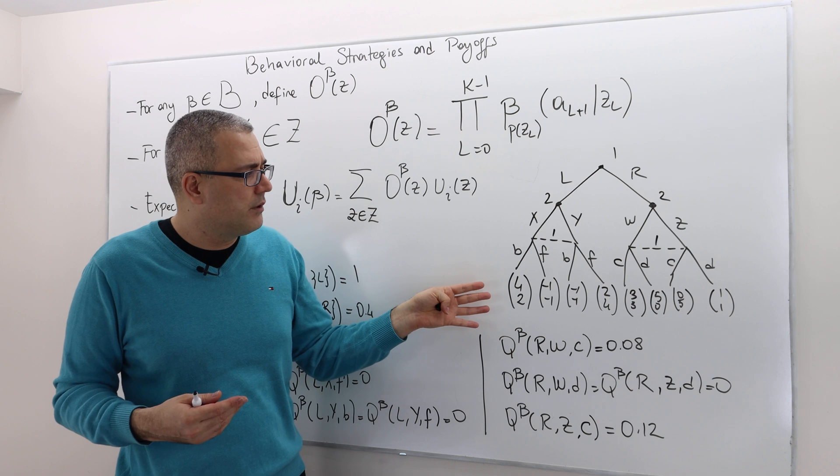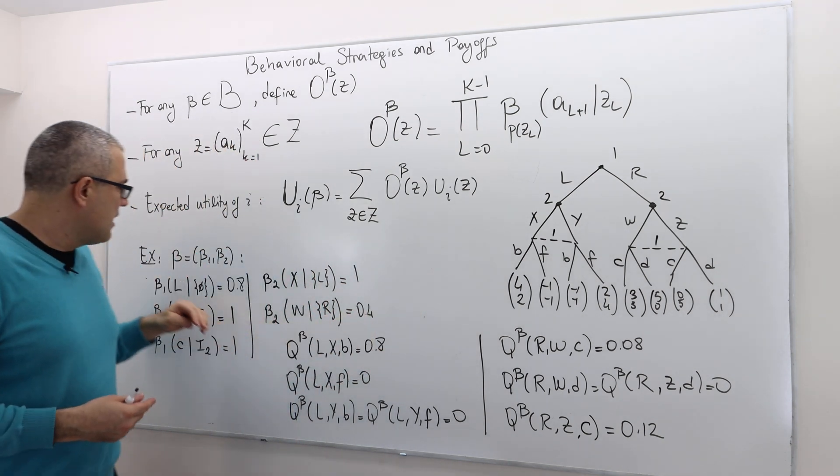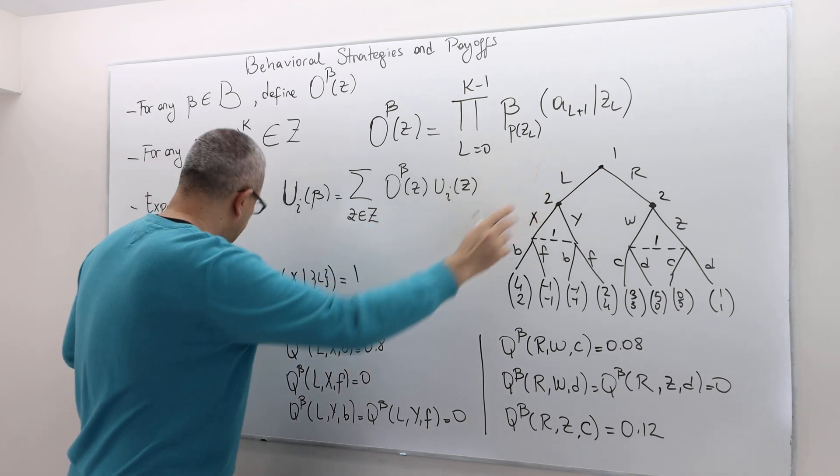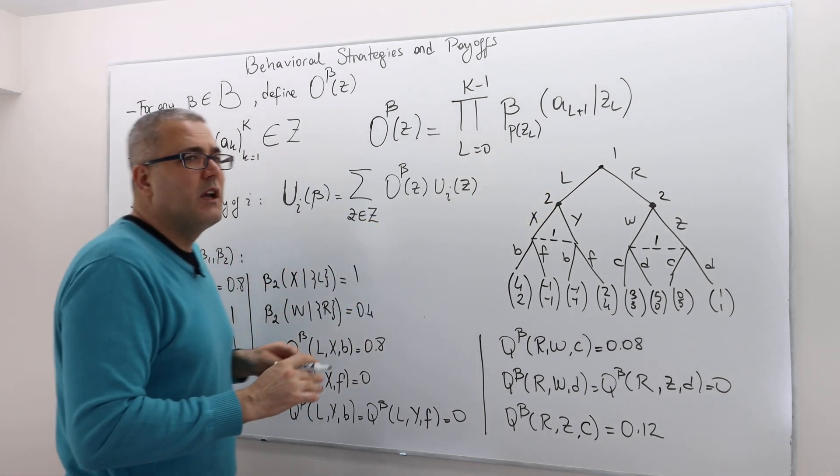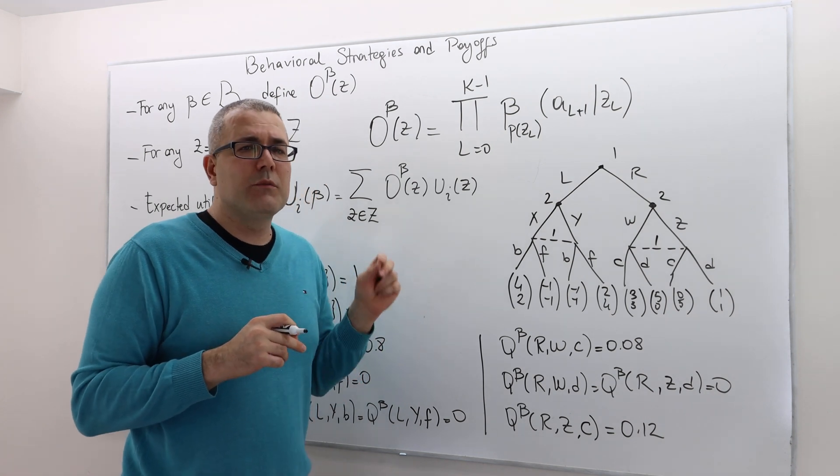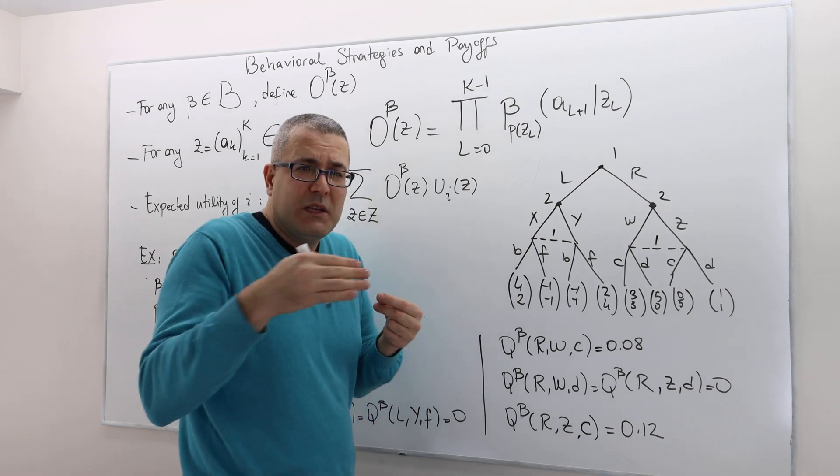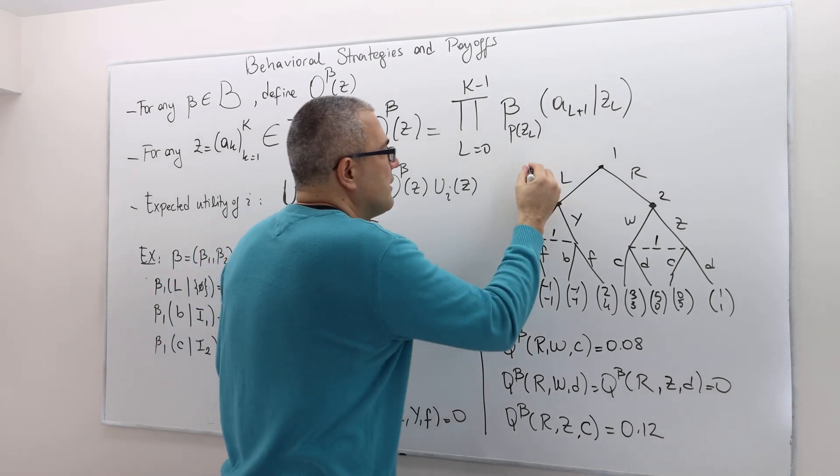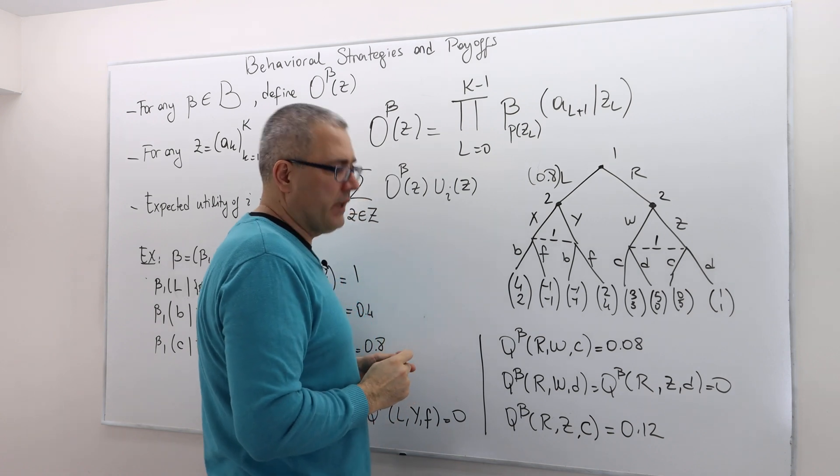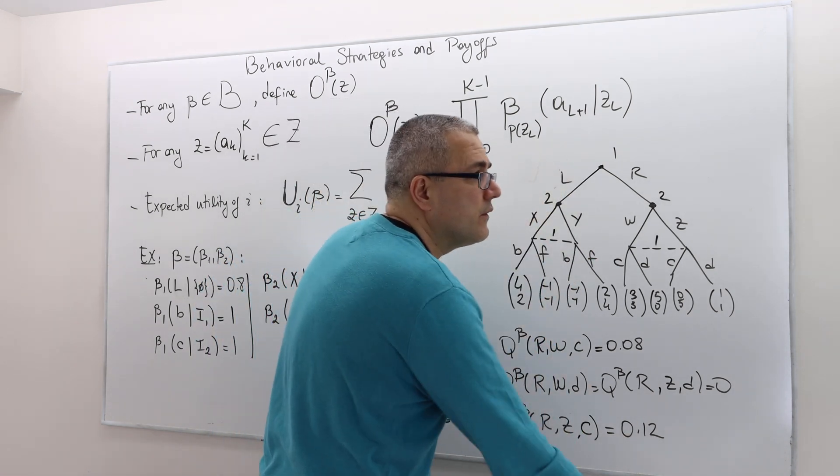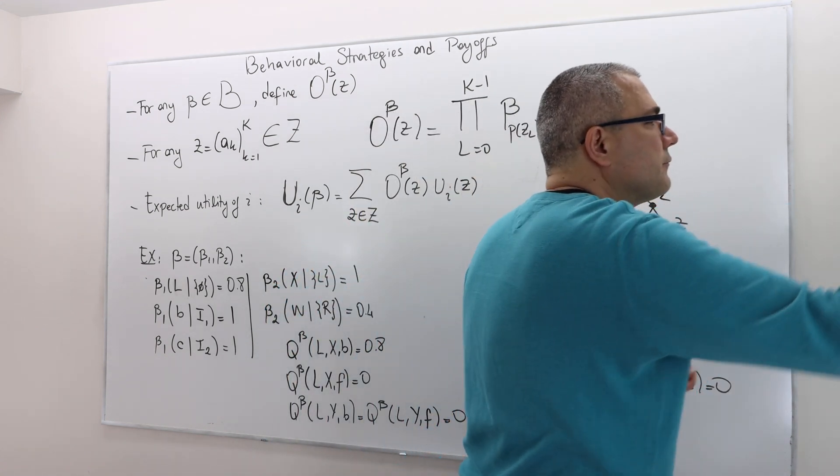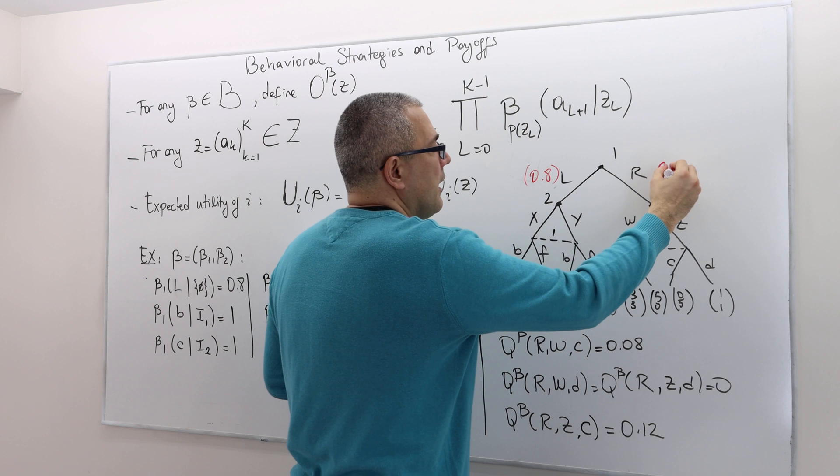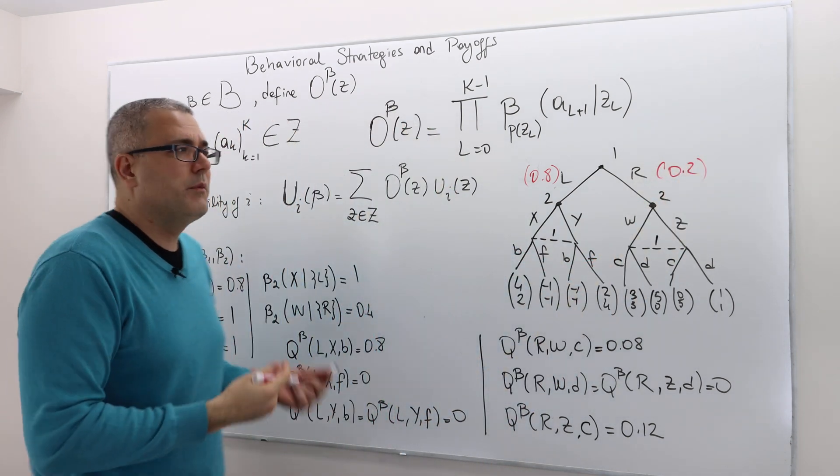If we reconsider the example we were talking about since the beginning, let's consider this behavioral strategy profile. After the initial history, at the first point, player one is supposed to play L with 0.8 probability. The nice thing about behavioral strategy is you can put those probabilities next to each action, unlike the mixed strategies, because the mixed strategies are a mixture of the contingency plans.